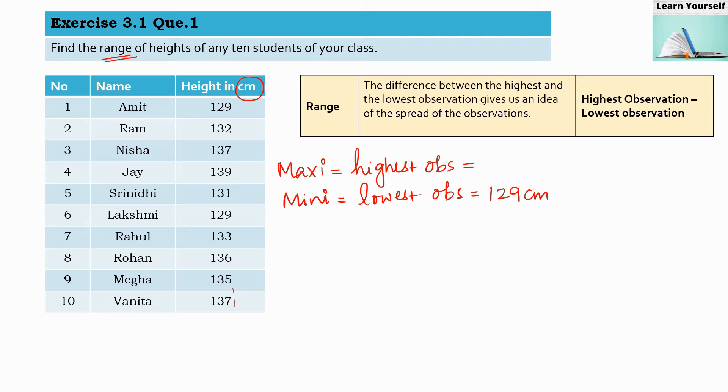Now we are going to find out the maximum height and the highest observation. So 132, 137, 139. So this is the highest till now, 139. Yes, so this observation is the highest among all, 139 centimeters.